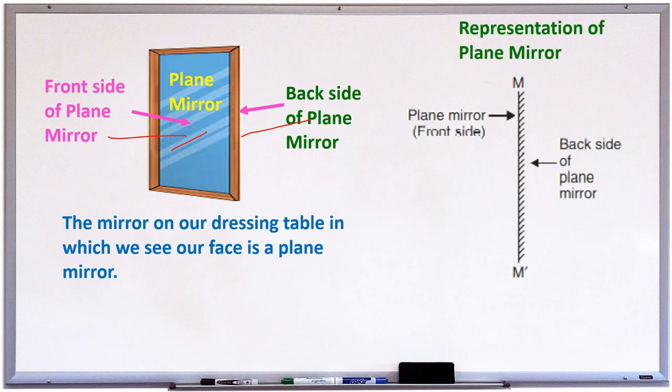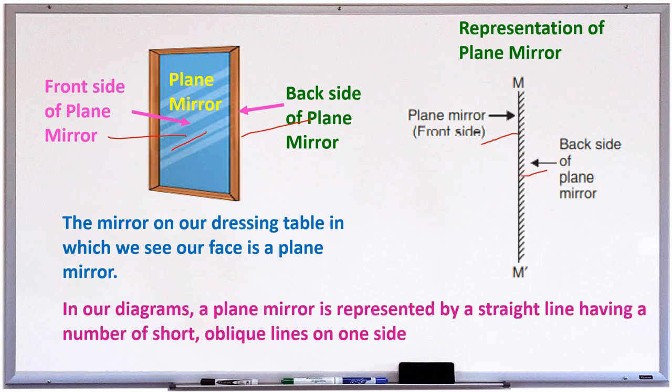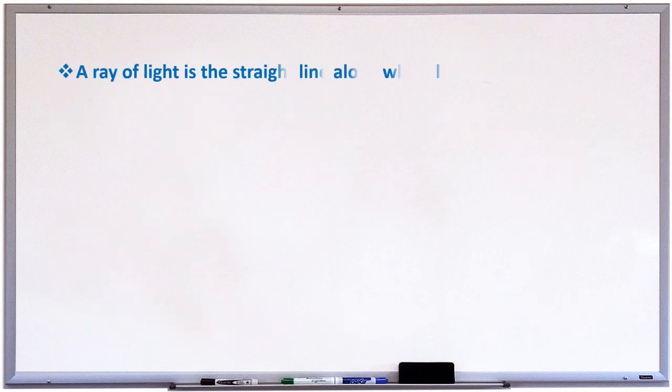Now, representation of plane mirror. You all see in your textbooks, mirrors are like this only. This is the front side of the mirror whereas this is the back side of the plane mirror. In our diagrams, a plane mirror is represented by a straight line having a number of short, oblique lines on one side which is the back side of the mirror. And the plane surface is the front side of the mirror.